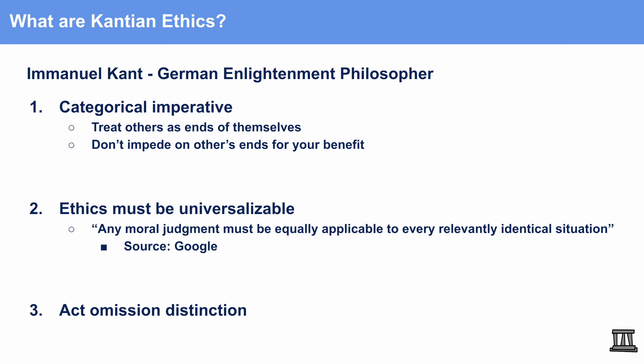The third and last distinction that Kantian ethics usually makes is an act-omission distinction. This says that not doing an action is not an action. For example, if I think of pressing the space bar on my laptop but don't actually do it, that's not an action because I'm not physically doing it. Even if I'm thinking it in my head, if I don't carry out the action physically, I'm not actually performing it. The act-omission distinction makes a distinction between omitting an action and doing the action.